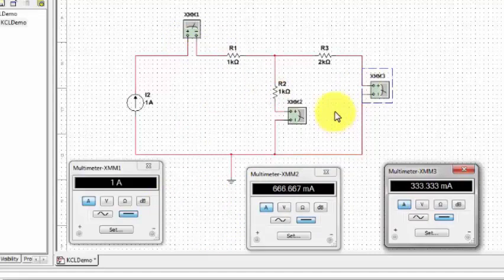This shows that for a node, the total current into the node is equal to the total current leaving the node.